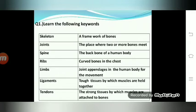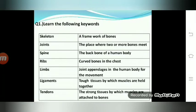Question number one: learn the following keywords. Skeleton — it is a framework of bones. Joint — it is a place where two or more bones meet. Spine — the backbone of a human body. Ribs — curved bones in the chest. Limbs — appendages in the human body for movement. Ligaments — tough tissues by which bones are held together. Tendons — strong tissues by which muscles are attached to bones.